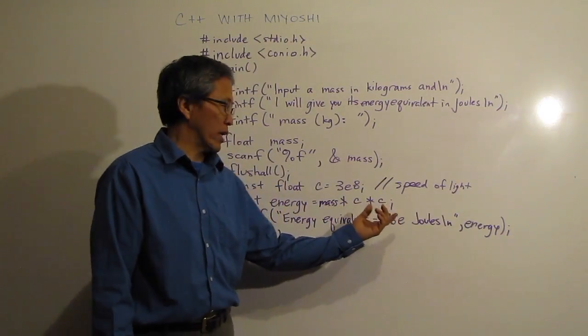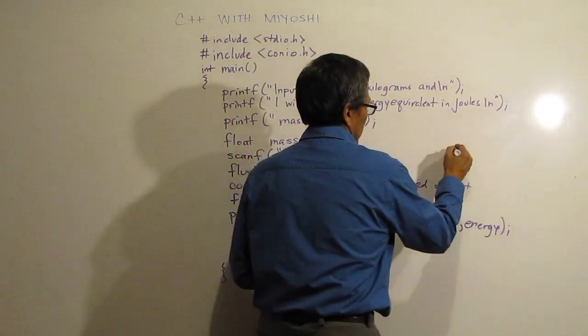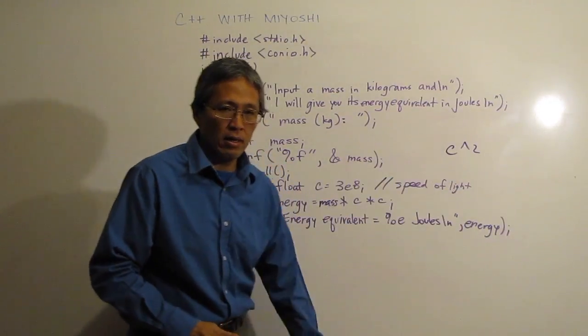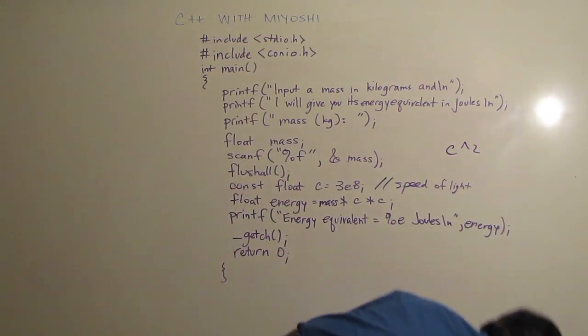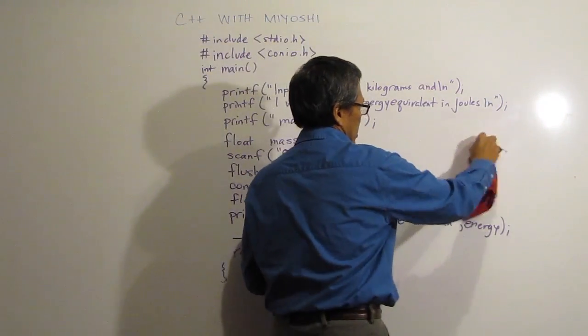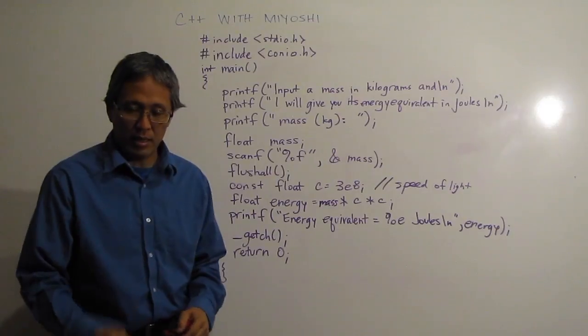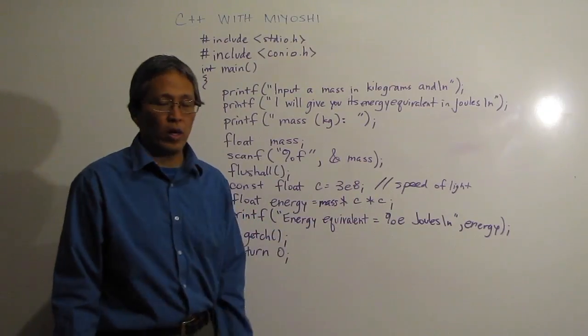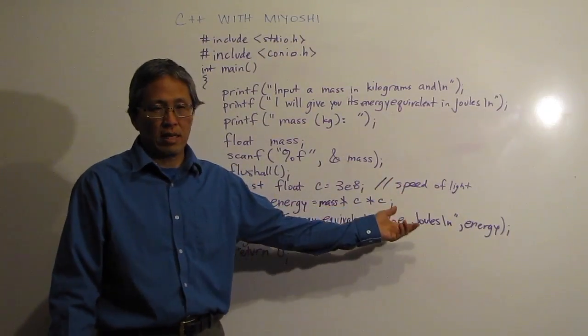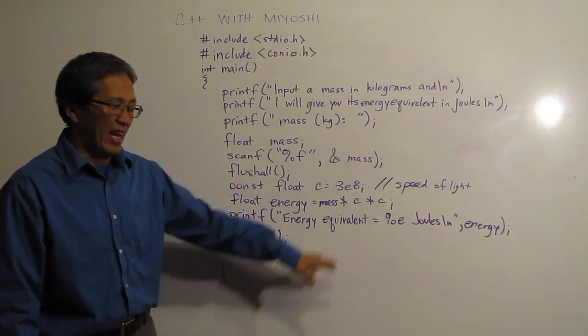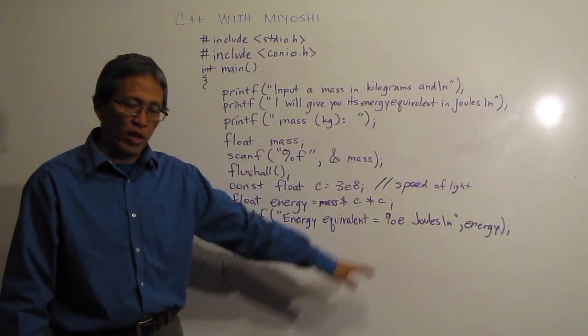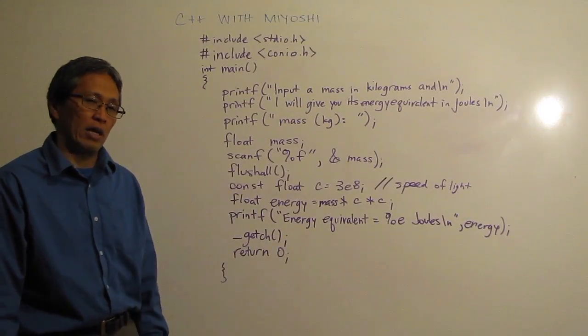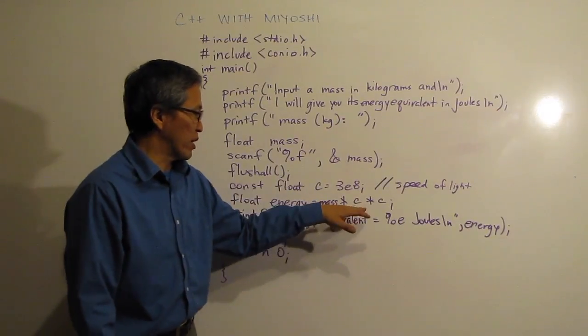Now instead of C squared, a lot of students will try to do C carat 2 because that is squared in some languages. That won't give you an error but it won't give you what you want. I believe that's an exclusive or, so don't use C carat 2 in this case, at least in C++. So float energy is mass times C times C, this is squared. If you want to do cubed, C times C times C. That's not going to give you any energy in this case, but as we get to functions then we'll be able to do that more efficiently, not more efficiently but in a different way using functions. But for now we're going to use C times C for C squared.